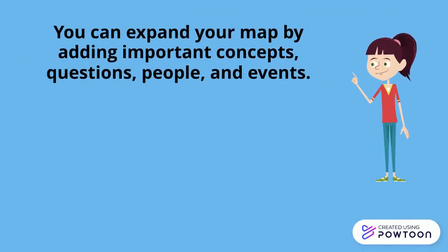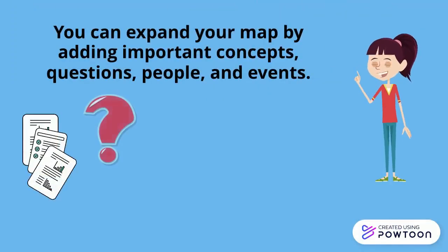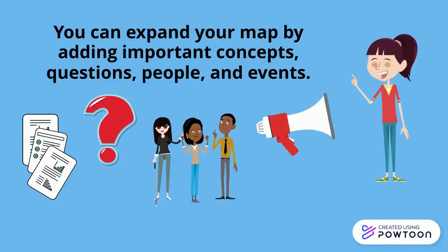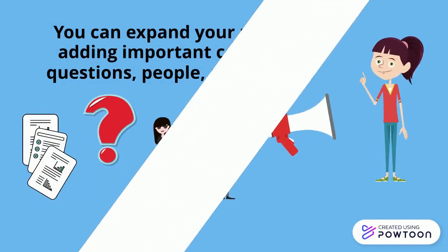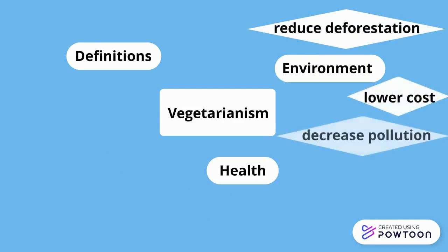You can expand your map by adding important concepts, questions, people, and events. For my subtopic environment, I'll include benefits such as reduces deforestation, the lower cost of eating plant-based versus that of feeding animals for meat production, and the decrease in pollution.